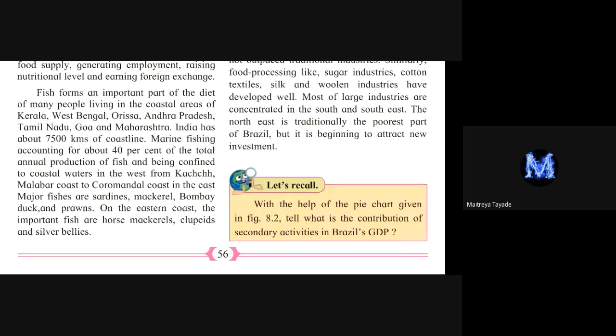India has about 7,500 kilometers of coastline — a very long coastline. Marine fishing accounts for about 40 percent of total annual fish production, and is confined to coastal waters — from Kutch to the Malabar Coast in the west, to the Coromandel Coast in the east. Major fishes include sardine, mackerel, Bombay duck, and prawns.